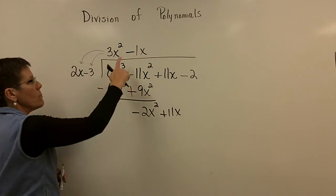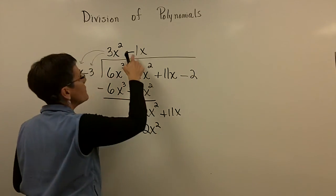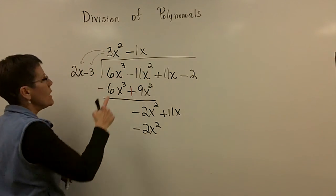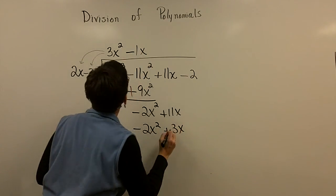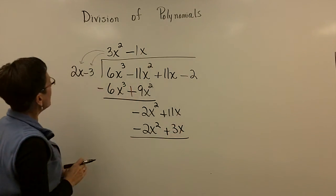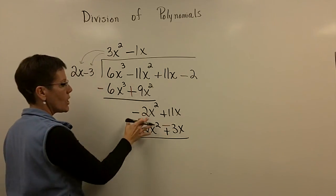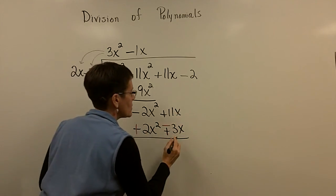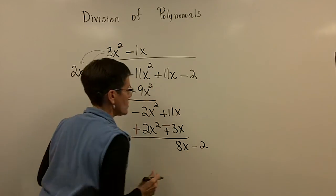Minus 1x times 2x is a minus 2x squared. But that 1 is not necessary. And this minus 1x times a minus 3 is a positive 3x. And then I have to change my sign. So I'm going to change my sign and change my sign. Gone. 11x minus 3x is 8x. And then I'm going to bring down my minus 2.